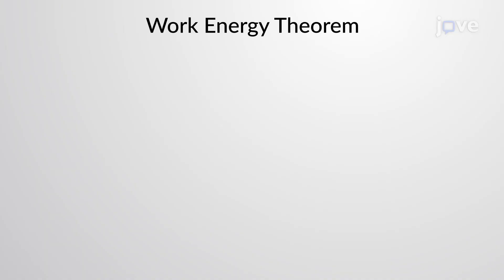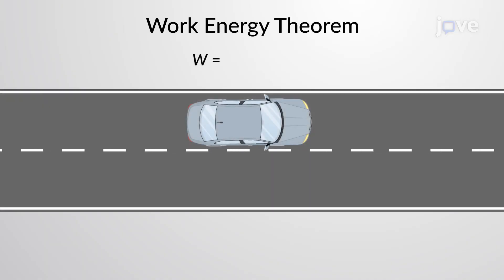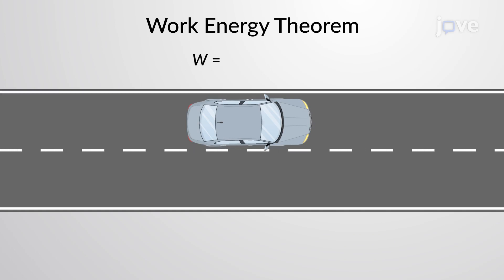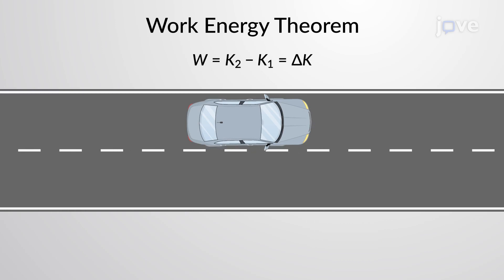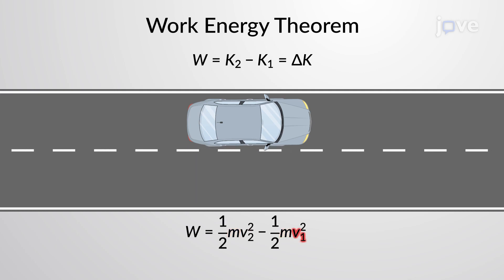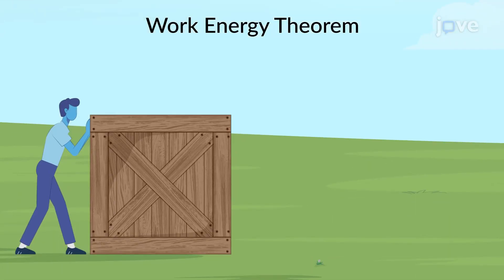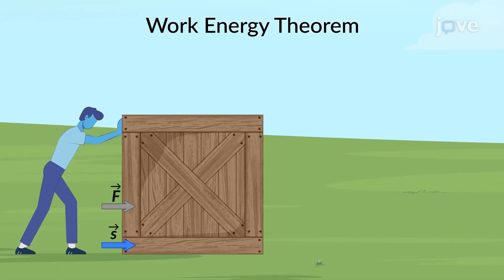The Work Energy Theorem states that the total work done by all the forces on an object is equal to the change in kinetic energy of that object, where m is the mass and v1 and v2 are the initial and final velocities of the object. For instance, when a force is applied to a box,